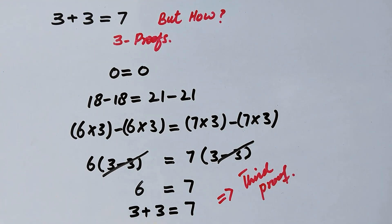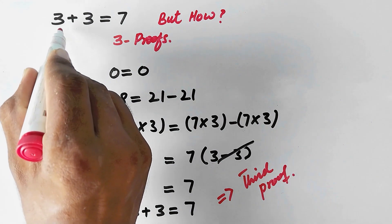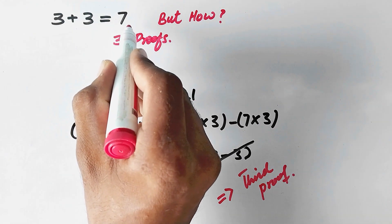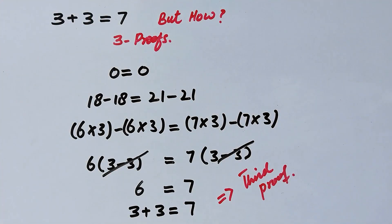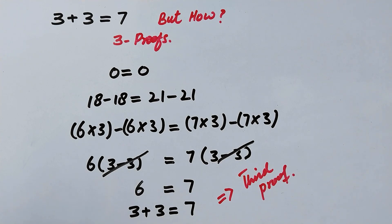So here I have given 3 proofs that 3 plus 3 is equal to 7. But mathematically, it is not possible. Can you please tell me in the comment box what is wrong in these solutions? Thanks for watching. Take care. Bye.